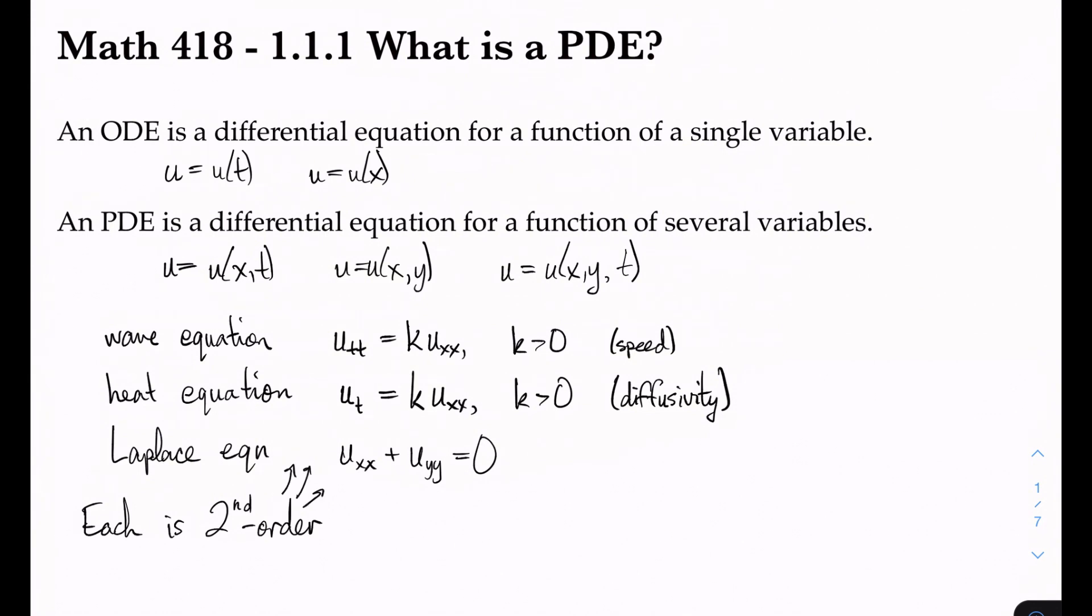The order refers to the largest number of derivatives on a single term u. And it turns out that most interesting physical PDEs actually are second order. There's a couple of third order here and there, maybe one or two fourth order, but above that like fifth order is basically unheard of. And there's a couple of first order ones as well, but typically those tend to be less interesting.